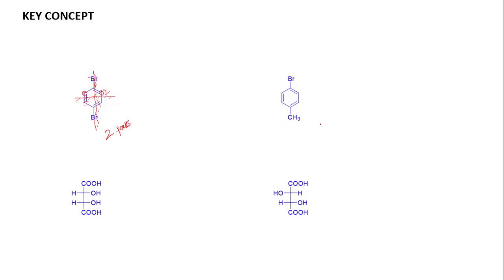Now if we look at 1-bromo-4-methylbenzene, this compound contains only a vertical plane of symmetry. For this compound, the number of distinguished carbons we get is five: some carbons are equivalent by symmetry on each side, but overall there are 5 non-equivalent carbons. So the total number of peaks will be 5.